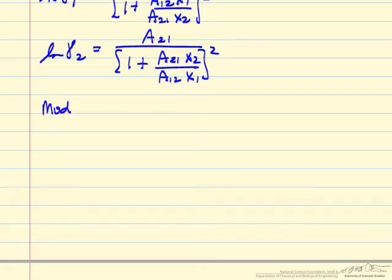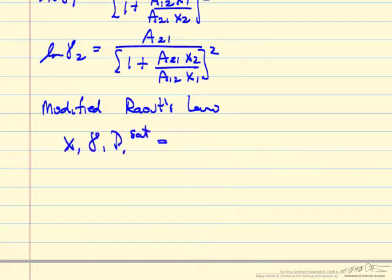We're ready to solve the equations for vapor liquid equilibrium since we are using modified Raoult's law, which is x1, gamma 1, p1 sat is equal to y1 times p, and then corresponding equation for component 2.